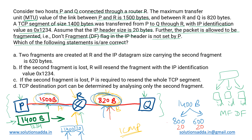For the first fragment of 800 bytes, the MF flag is set to 1 because more fragments are following. For the second fragment of 600 bytes, the MF flag is 0. The DF flag is 0 for both, meaning fragmentation is allowed. It may be set to allow further fragmentation if there are more routers with even shorter MTUs ahead in the path.